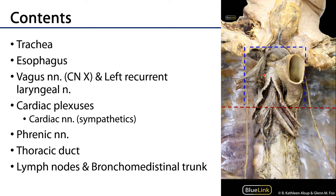Moving deeper, we can see the trachea, and behind the trachea the esophagus — that muscular tube heading down towards the stomach. The trachea bifurcates at about the level of the thoracic plane; the carina there helps to direct air traffic between the right main stem bronchus and the left main stem bronchus.